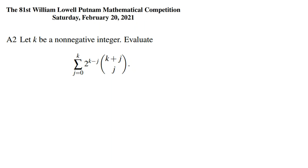This is the 2021 platinum problem, the second problem of part 1. We want to solve this sigma. It says: let k be a non-negative integer, evaluate the sum from j=0 to k of 2^(k−j) times (k+j choose j). Now let's calculate this.